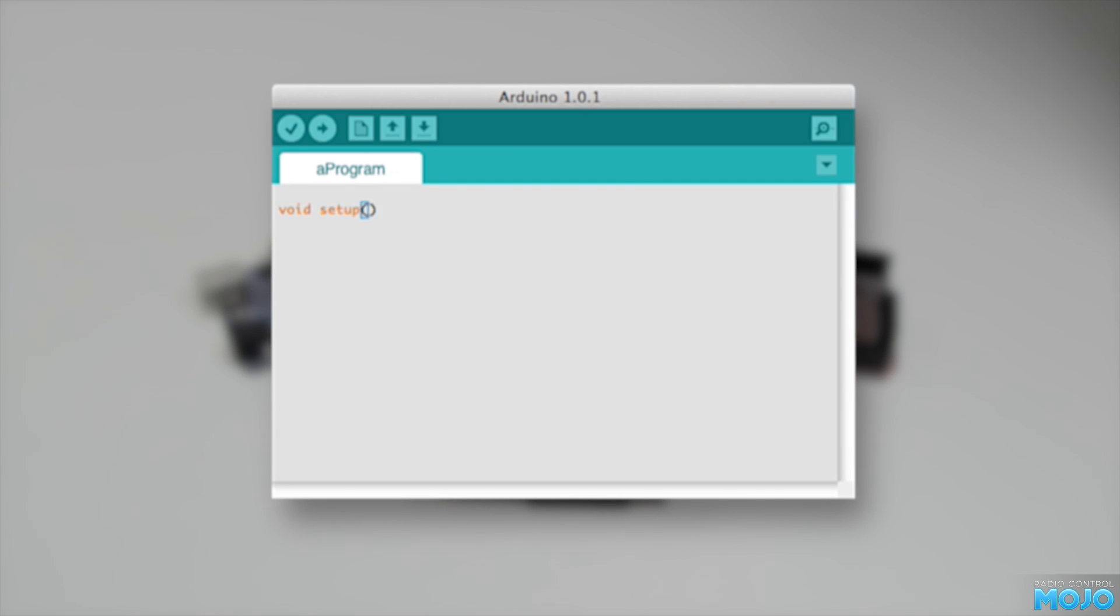The first thing we do is set up the hardware. Setting pin 13 to output, as the Arduino already has an LED attached. And we set pin 4 as the input, which is where we connect the receiver signal.